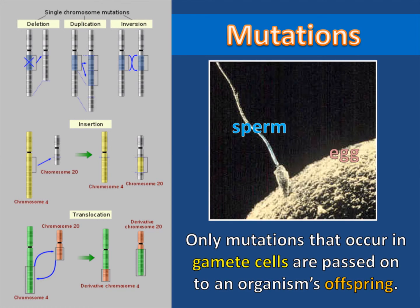It's important to understand that only mutations that occur in gamete cells are passed on to an organism's offspring. If the mutation occurs in the skin cell of an adult, that will not be passed on to their child. Only if the mutation happens in the sperm or egg created by the adult will it be passed on to their children.